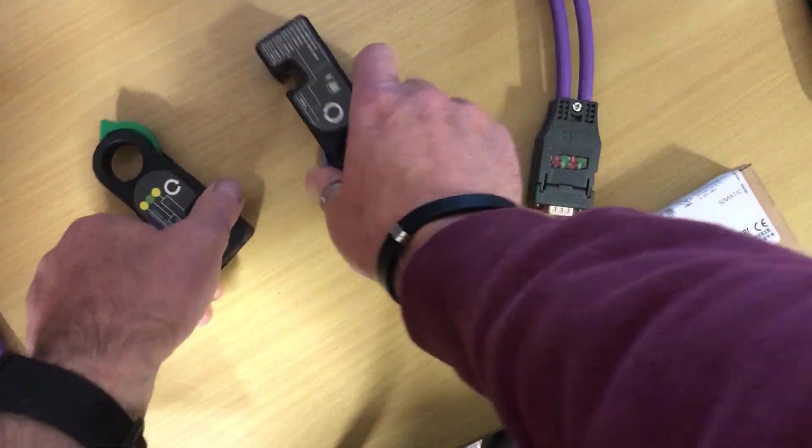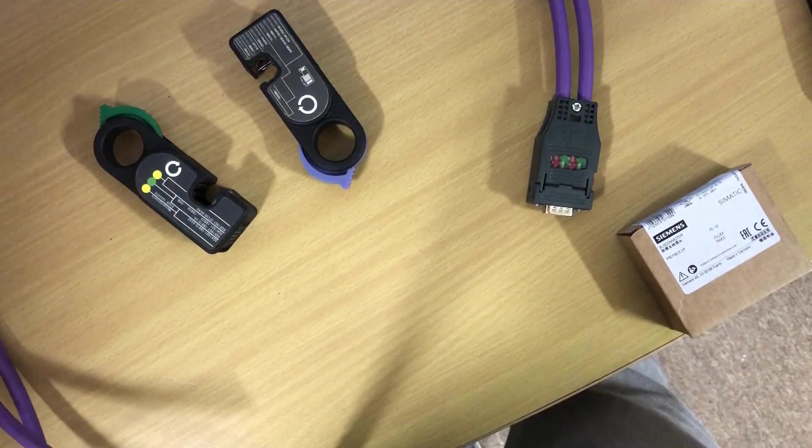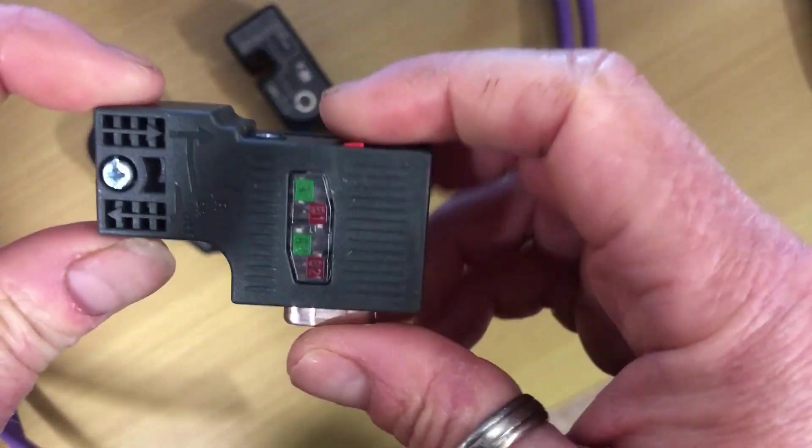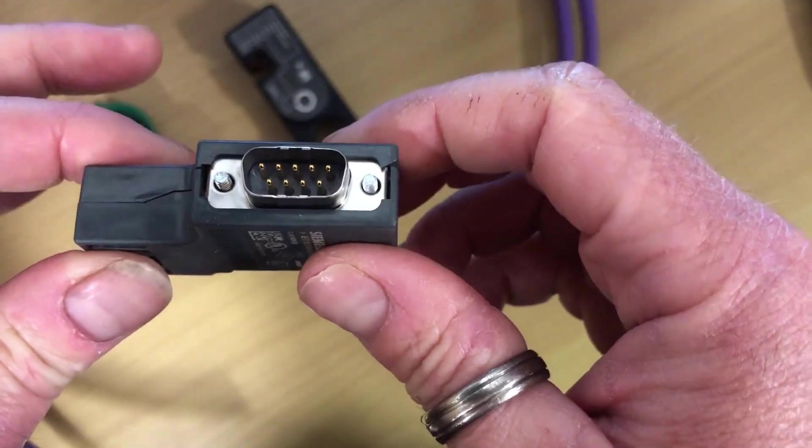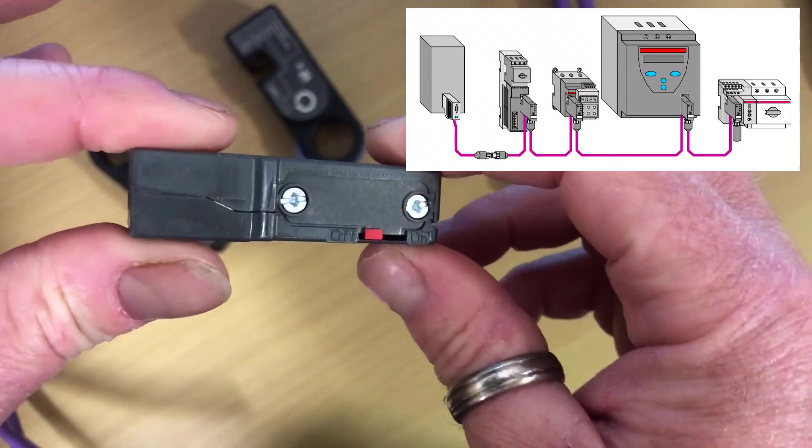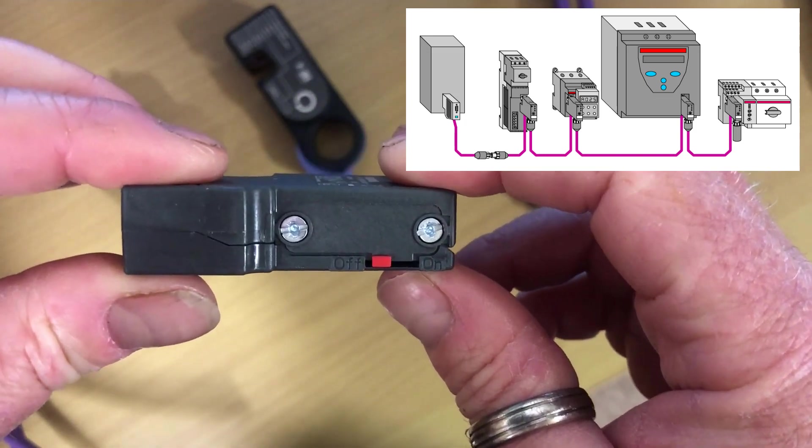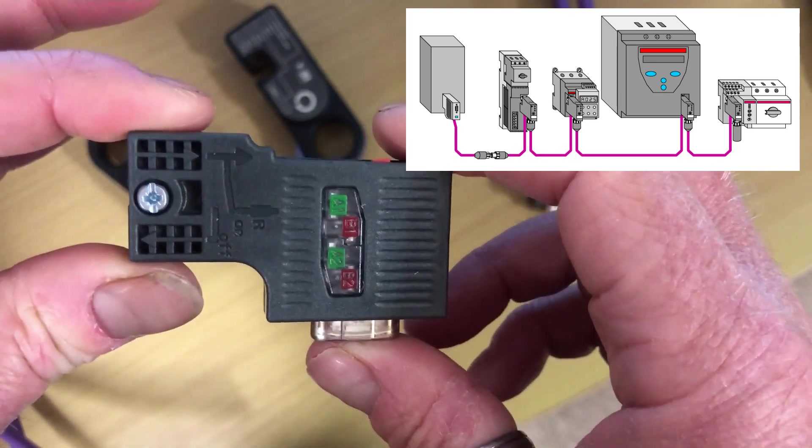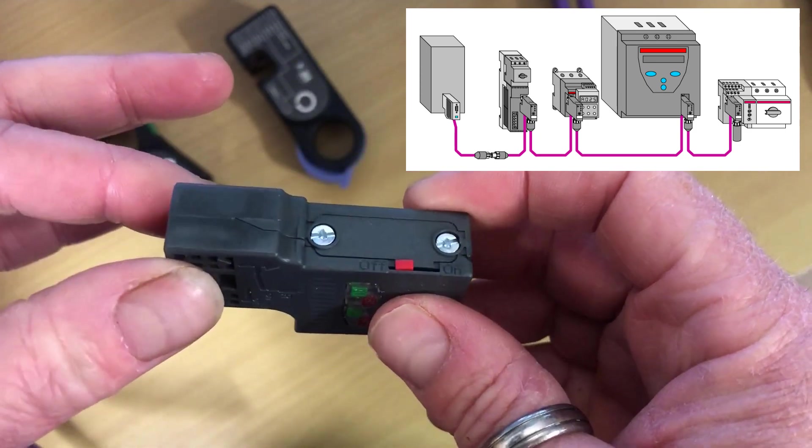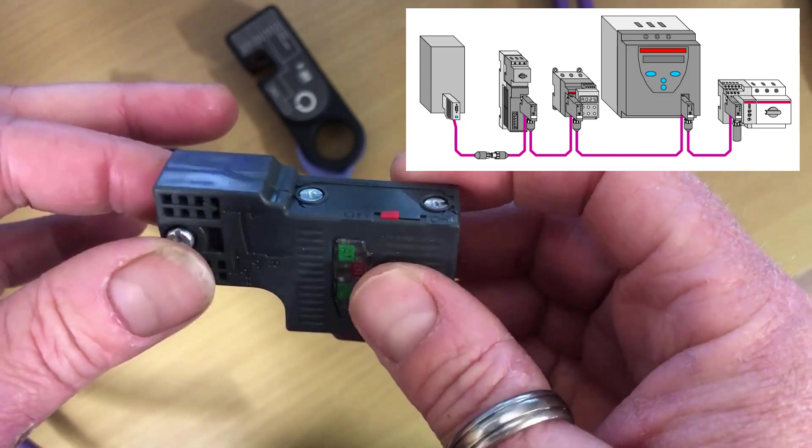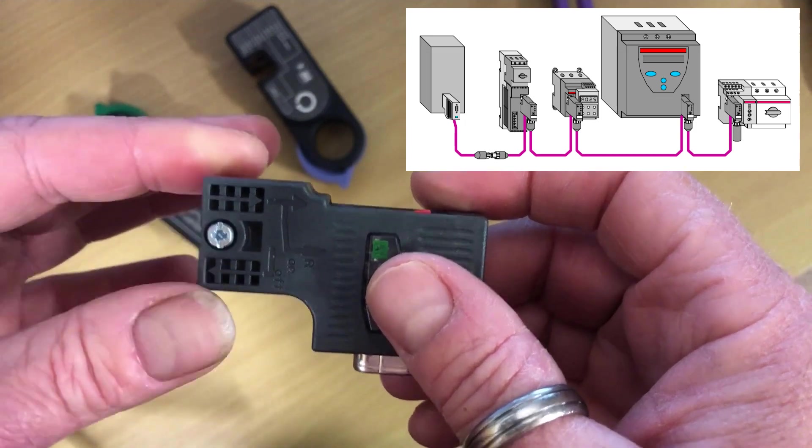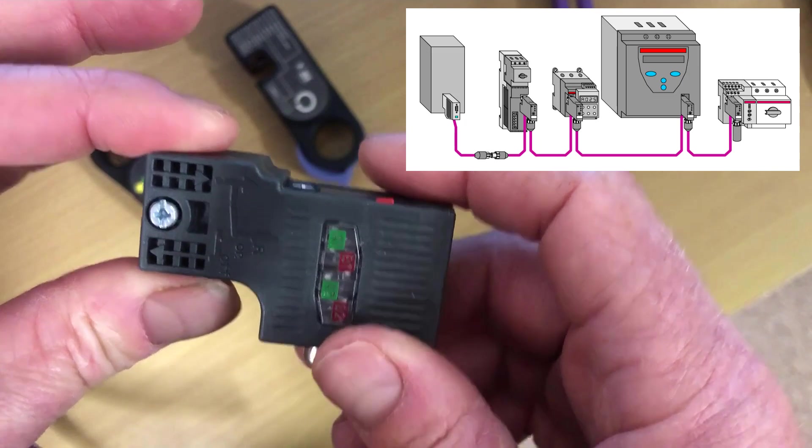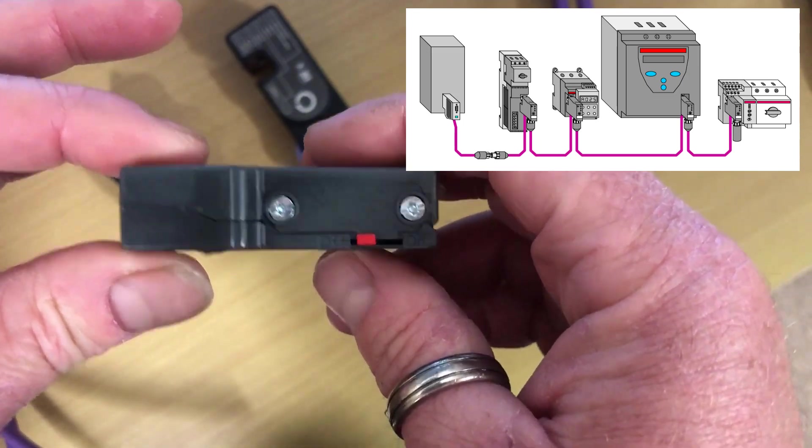So those are your two tools and what we'll have a look at first is the Profibus DP connections. So there's various types of Profibus DP connectors and really when you look at network issues, bad termination and connections are where it normally happens. We have to remember that DP is not a network really designed to be connecting directly to instruments out in the field in challenging applications like hazardous area, very dusty and high moisture contents.